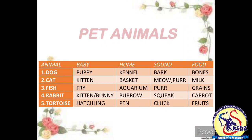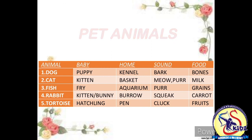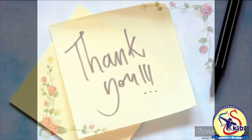So kids, we have learnt about pet animals which are dog, cat, fish, rabbit, and tortoise. I hope you have understood this topic. Please revise this topic. Thank you.